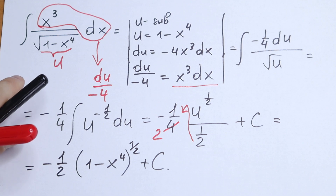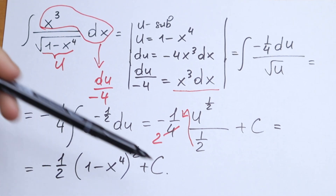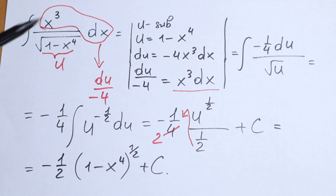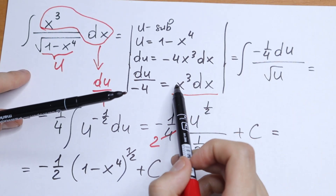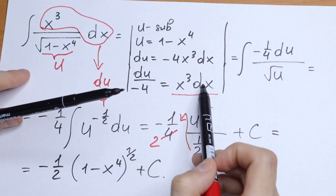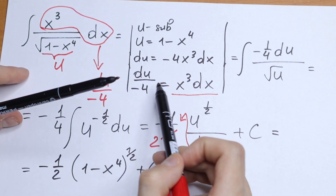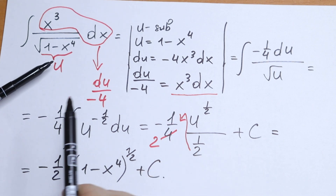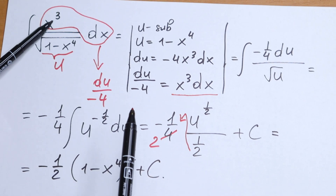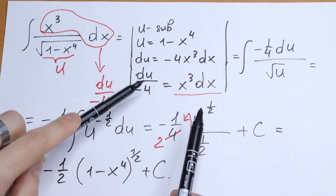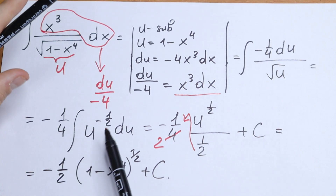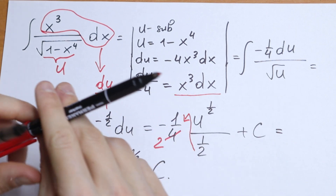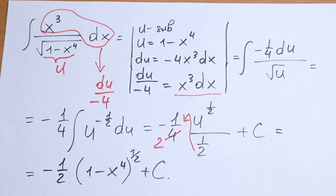If you have any questions or suggestions, or maybe you have a faster method to solve it, note that the key moment was recognizing that x cubed dx equals du over minus 4, making the substitution work perfectly. Write your suggestions and questions in the comments.